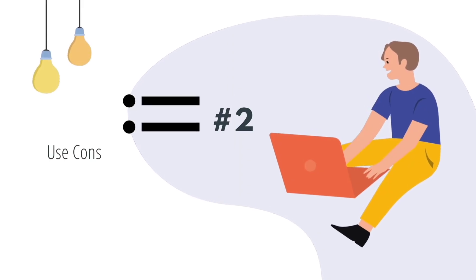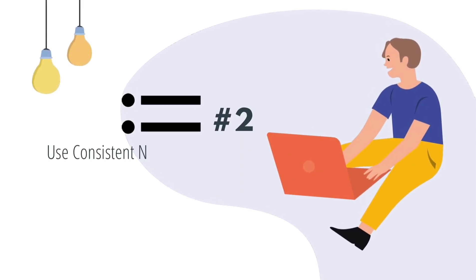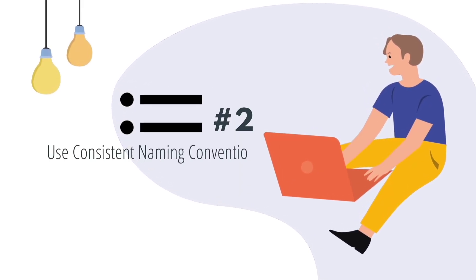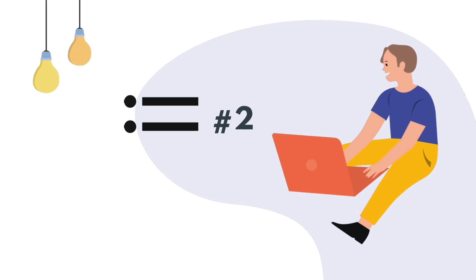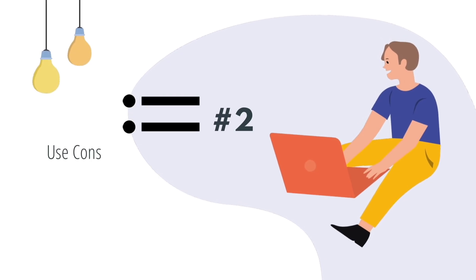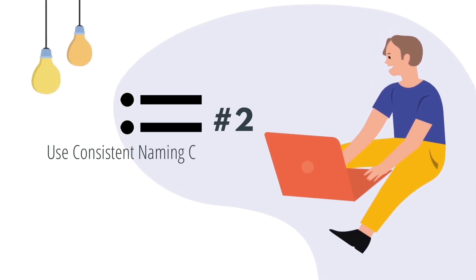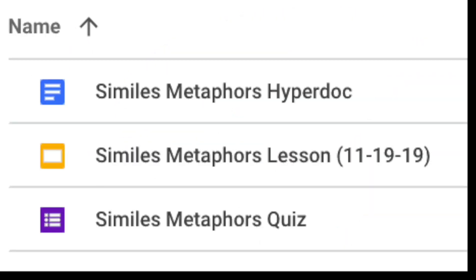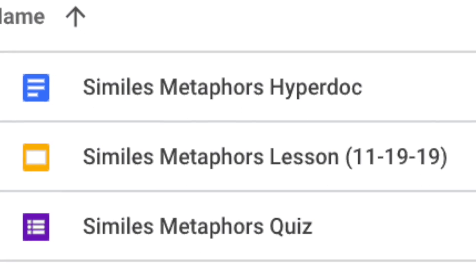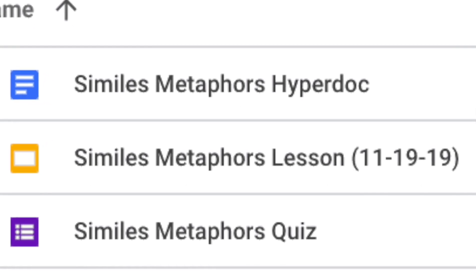Number two: use consistent naming conventions. A naming convention is the way you name your files. This is an old-school recommendation but still handy. Even though Google Drive will let you name your files however you like, it's important to be consistent. Keep your file names short but meaningful to you and to your students. A consistent naming convention will help you clean up your Google Drive.